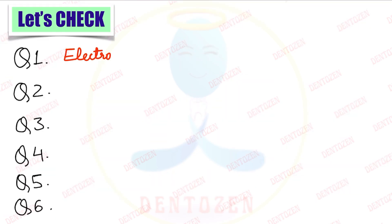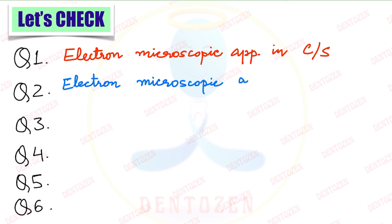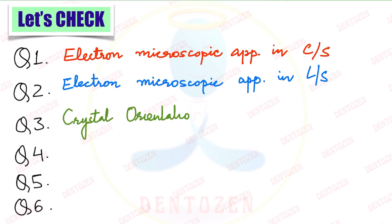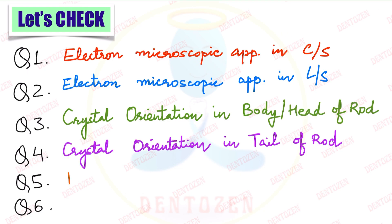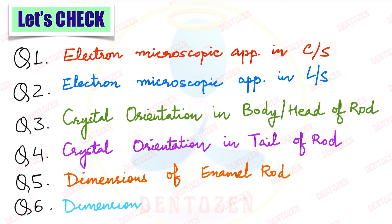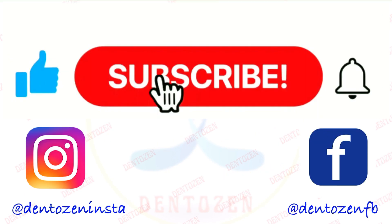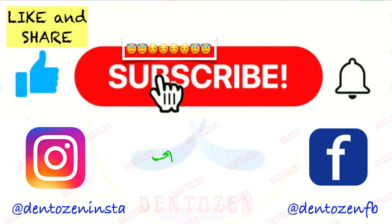Key review questions: What is the electron microscopic appearance of enamel in cross section? What is the appearance in longitudinal section? What is the crystal orientation in the body or head of the keyhole-shaped rod? What is the crystal orientation in the tail region? What are the dimensions of the enamel rod and the hydroxyapatite crystal? That is all for this video — like, share, keep watching, keep smiling, keep learning, and good luck for your exams.